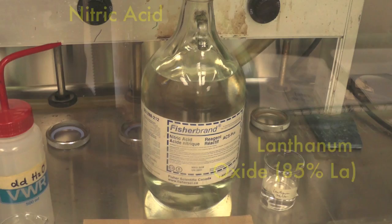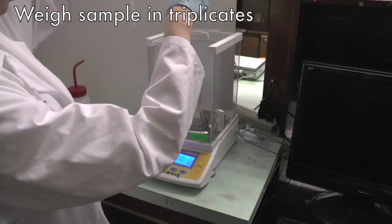Let's begin with the sample. Weigh 1.0 g of milk into a 50 ml Erlenmeyer flask. Perform in triplicates.